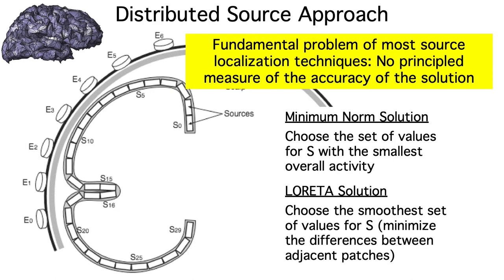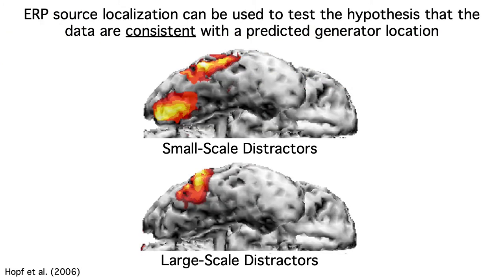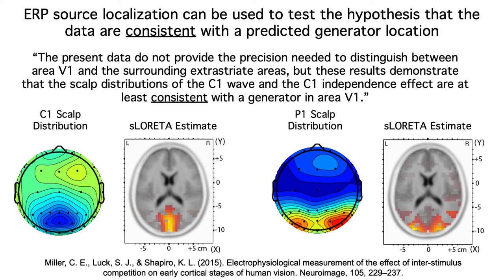The lack of a principled measure of accuracy doesn't invalidate all uses of source localization. Source localization methods can be useful for showing that the observed data are consistent with a given generator site, even if other source configurations might also be able to explain the observed data. So, if you read an ERP paper and it makes strong claims about the location of an ERP effect, you should be skeptical. But if the paper merely states that the data are consistent with a given location, that's usually fine.